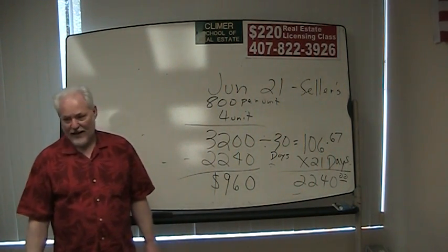Here's the deal: with interest, we pay interest in arrears. If you have a mortgage payment, you mailed your mortgage payment today and you paid your interest for the month of March. On May 1st, you'll pay your May 1st payment and pay your interest for the month of April. We normally pay interest in arrears.